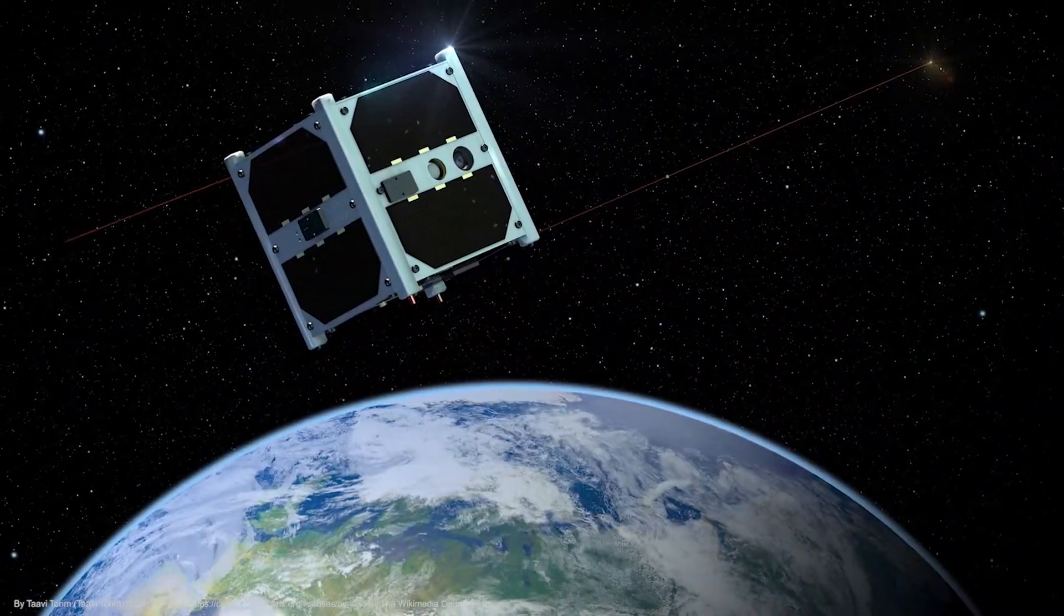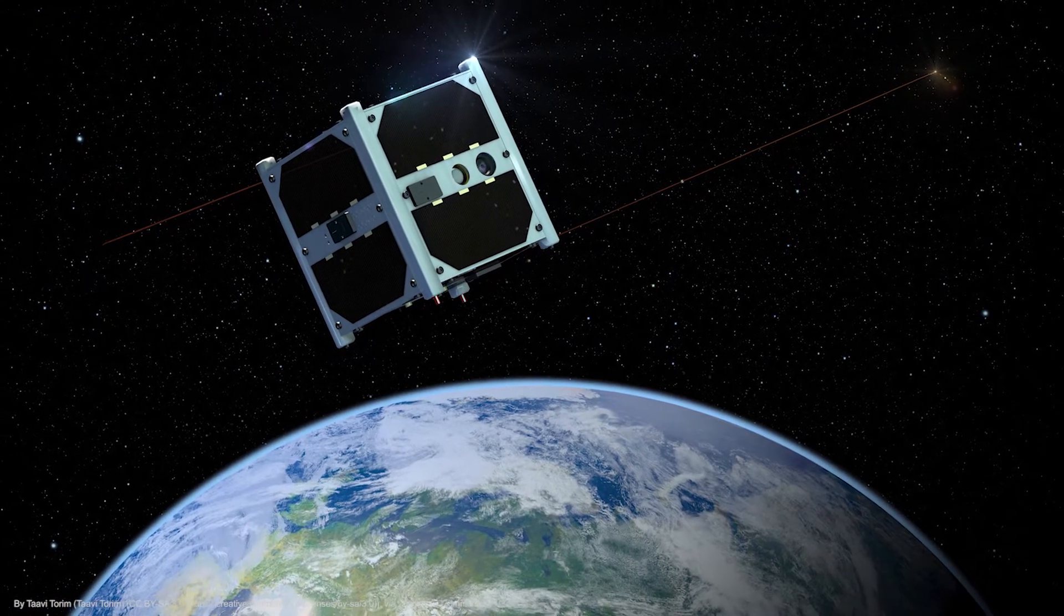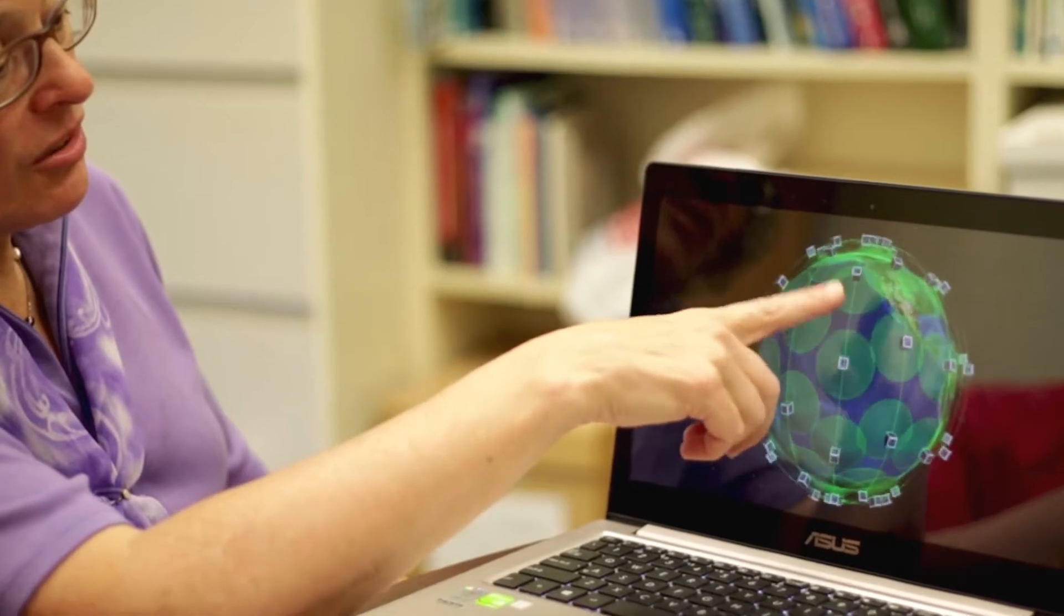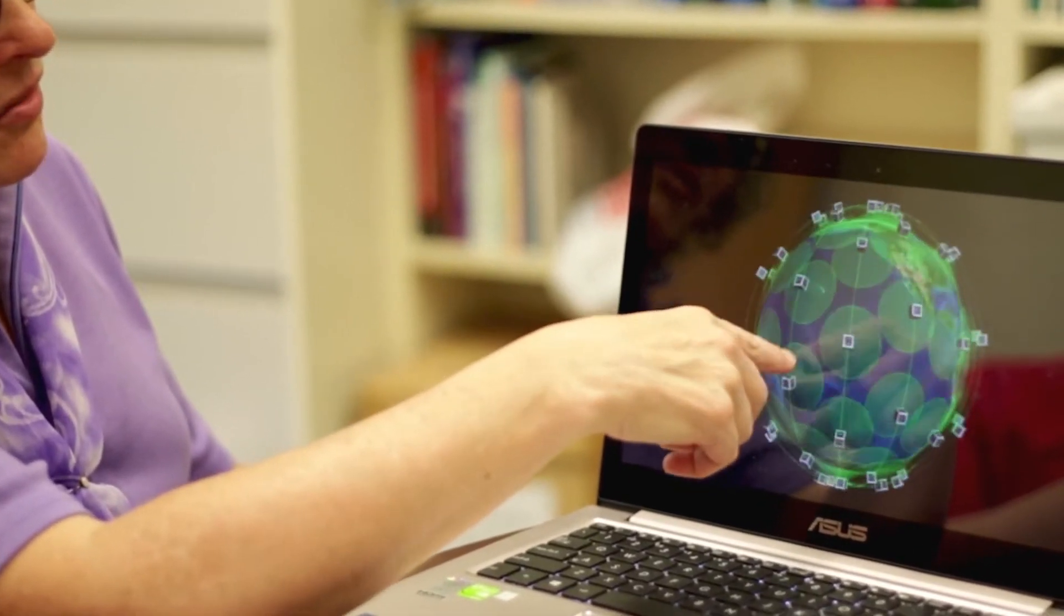When they're on the sunny side of the Earth, they recharge from the sun. When they're on the dark side, then they lose power. How do you arrange their orbit so that you get the coverage that you want?